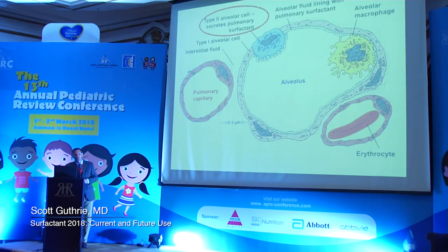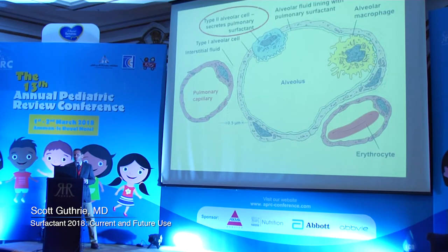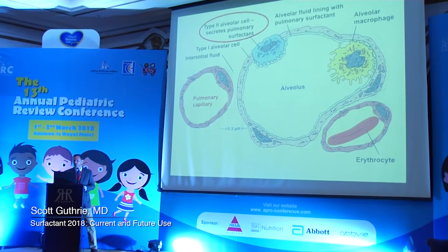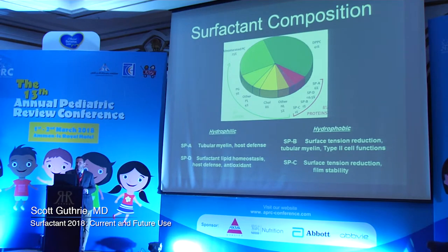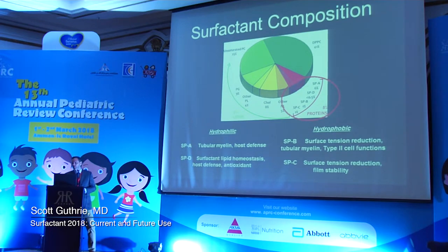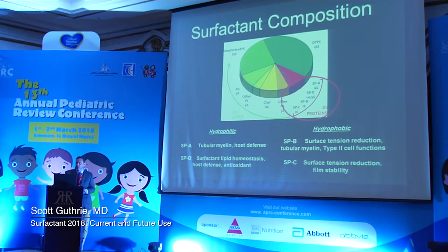Type 2 alveolar cells are important because they are the ones that secrete pulmonary surfactant, and they don't do this until approximately 34 to 36 weeks of gestational age. As we began to unlock the secrets of surfactant, it was determined that even though there is a large lipid component, it's really those proteins that are most important — surfactant protein B and surfactant protein C — which is what the currently available marketed surfactants contain in high percentage to help treat respiratory distress syndrome.